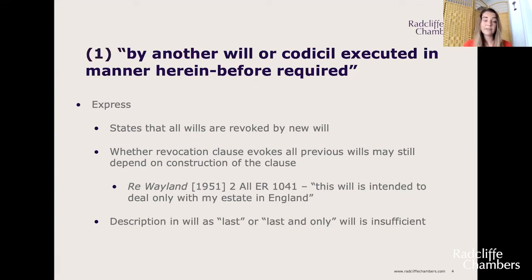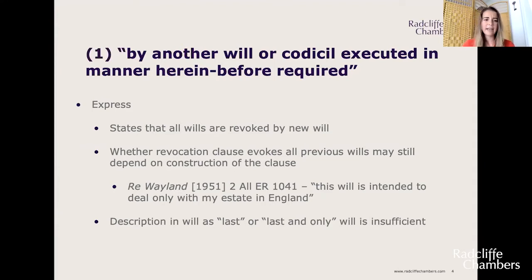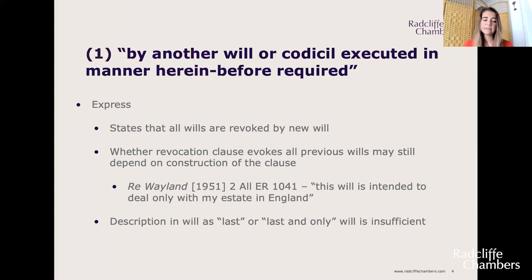There are a number of practical issues when someone's making a new will that revokes a former will. Although I'm primarily dealing with the position in England and Wales, it may be worth considering what happens if there's a foreign will or foreign assets in a different jurisdiction, and what's going to happen if a new will seeks to revoke those. I'll touch on the case of Reweyland a little later. Also, if a new will makes very different provisions, with extreme divergence favouring one beneficiary much more, it's worth considering issues such as capacity and undue influence.